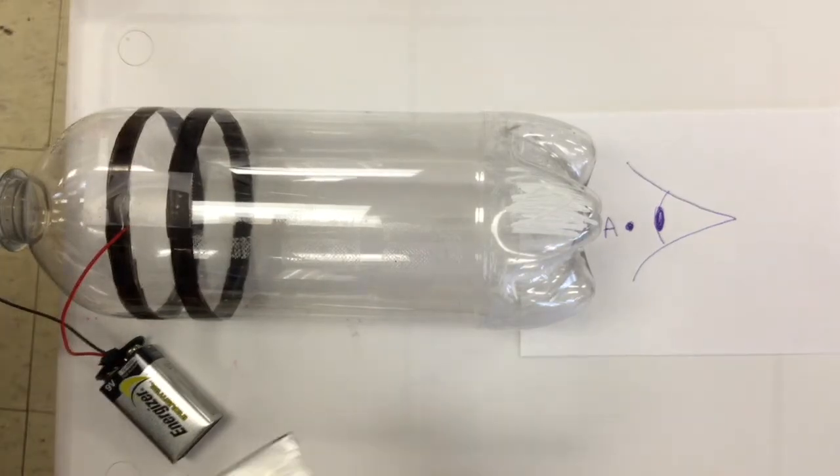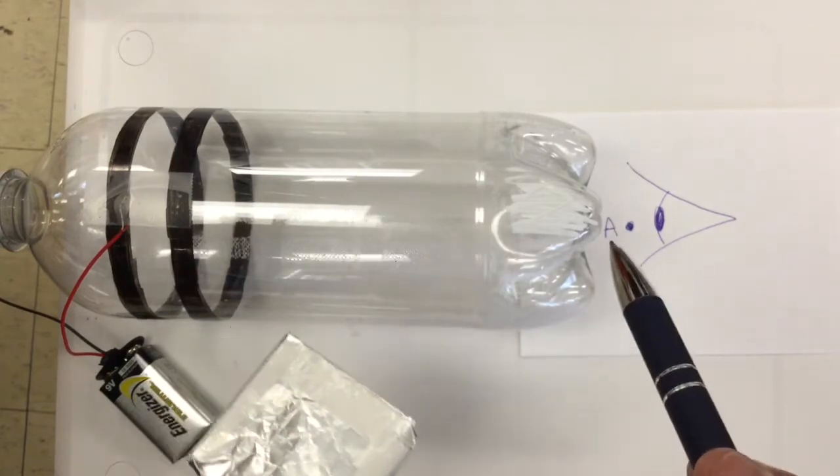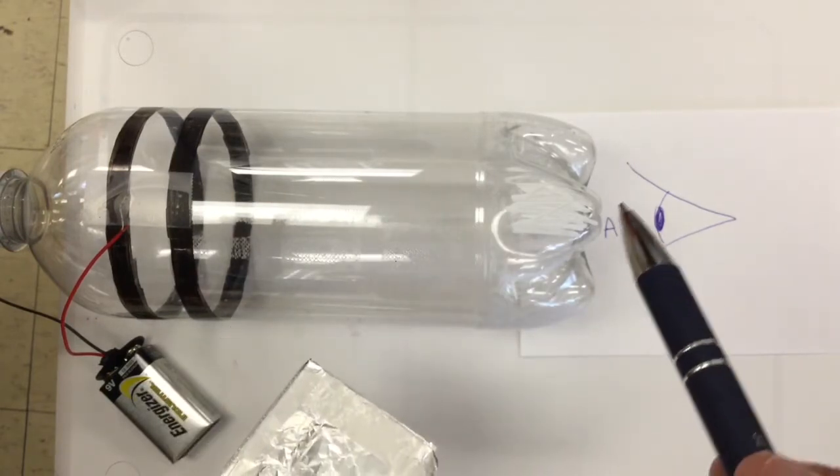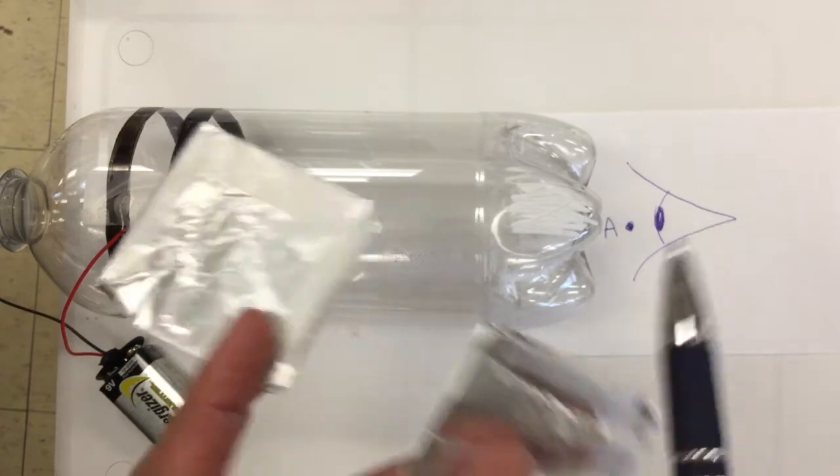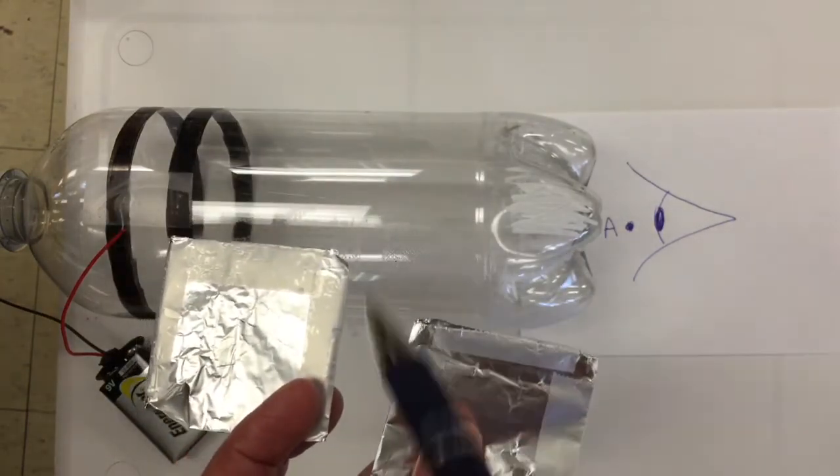Thomson wanted to observe if the beam that went straight at first would be deflected if he connected two metal parallel plates in this bottle.